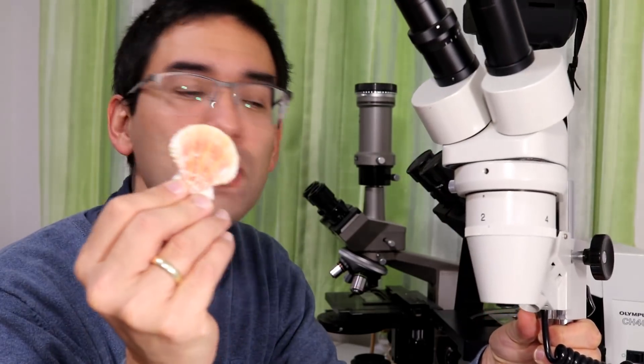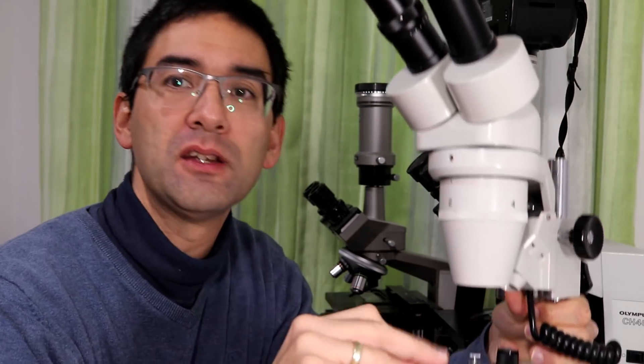Stereo microscopes allow you to look at objects that are opaque, that means that are not transparent. So if for example you would like to look at this seashell, it's quite easy. You can simply place it on the stage of the stereo microscope and you can start observing.